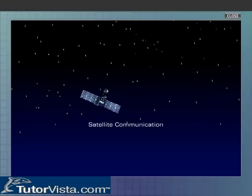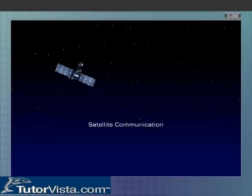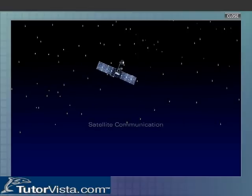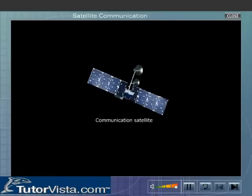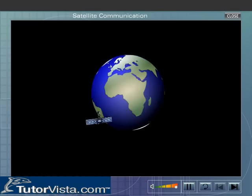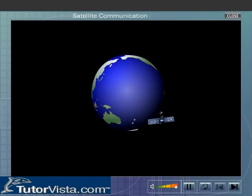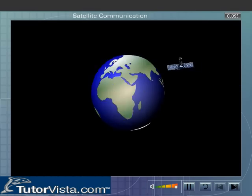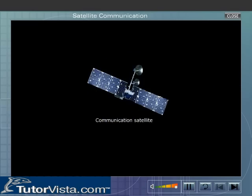Satellite communication: a satellite is an artificial body placed in an orbit around the earth or another planet. Communication satellites relay around the world telephone and fax messages, television programs, radio signals, and so on.